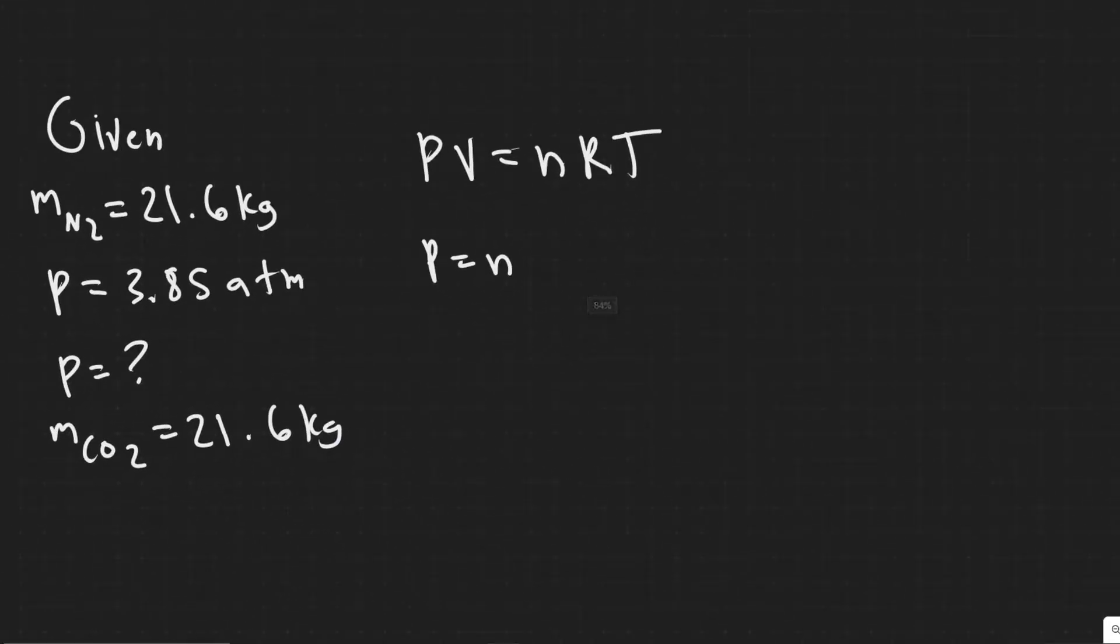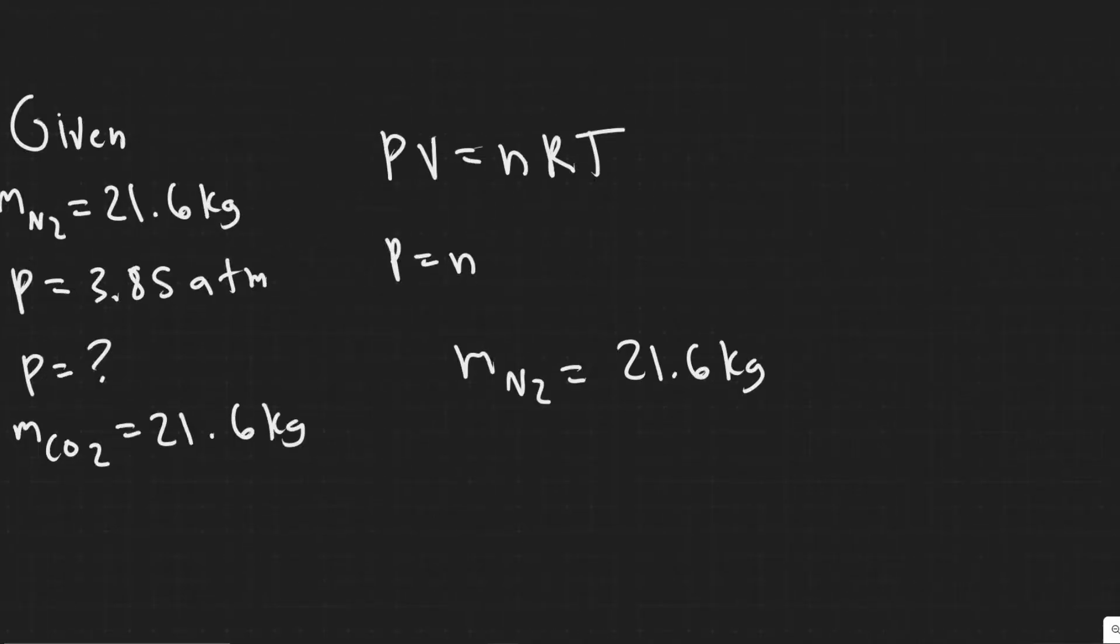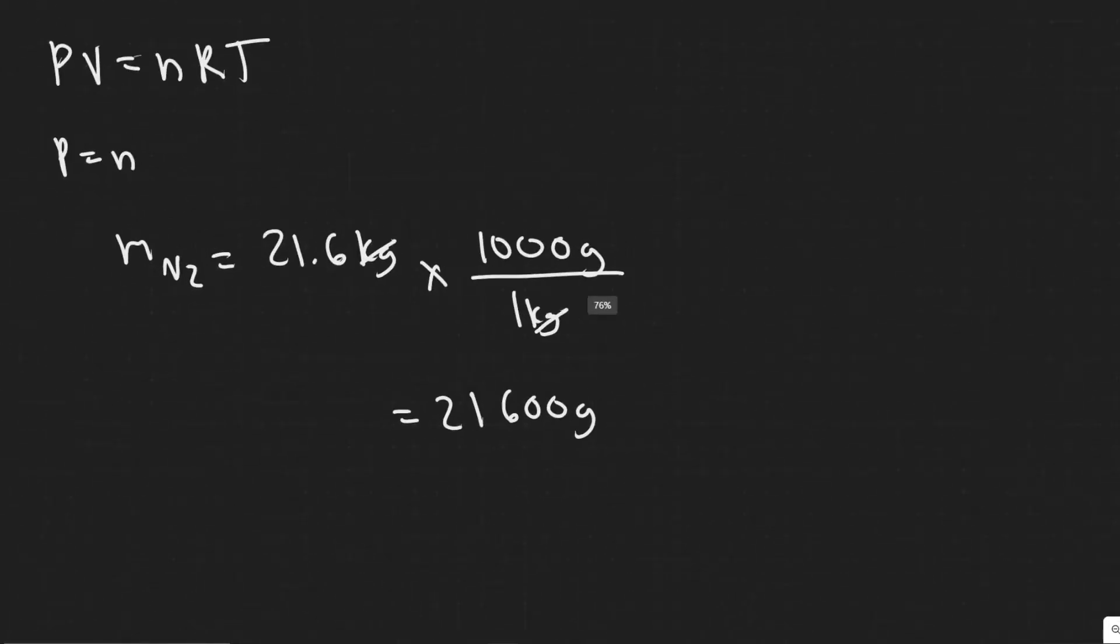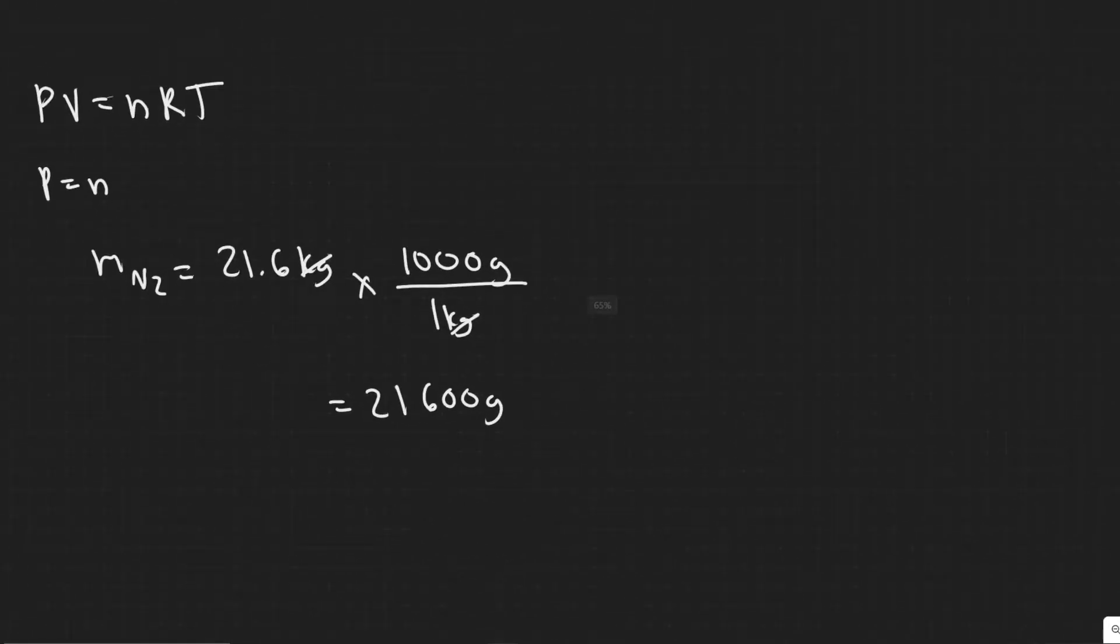So starting off with mass N2, we know it's equal to 21.6 kg. And we know that 21.6 kilograms is, or to convert it into grams, we know that one kg is a thousand grams. The K just means a thousand. So this is basically 21,600 grams. That's the amount of grams of N2 we have.